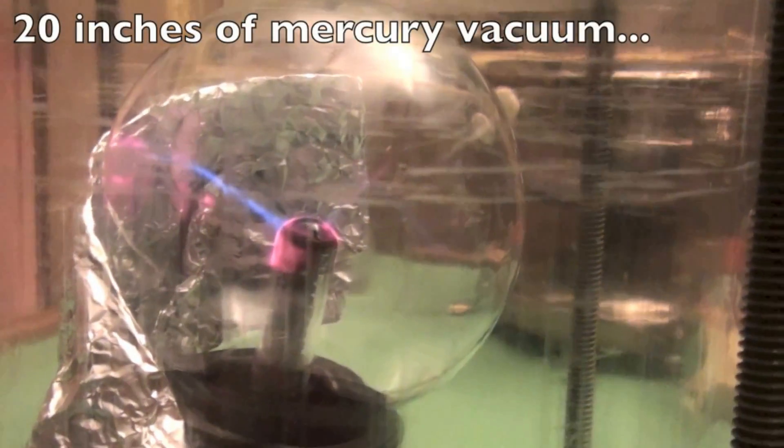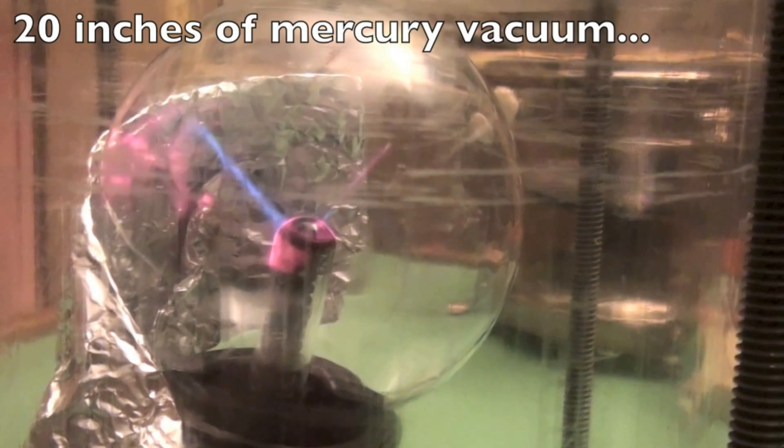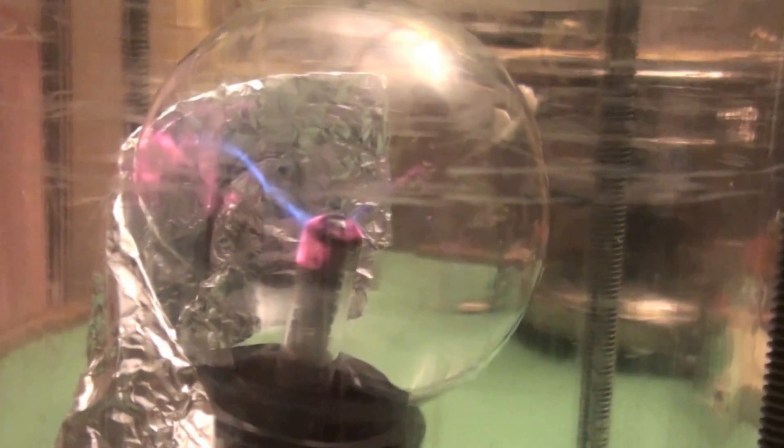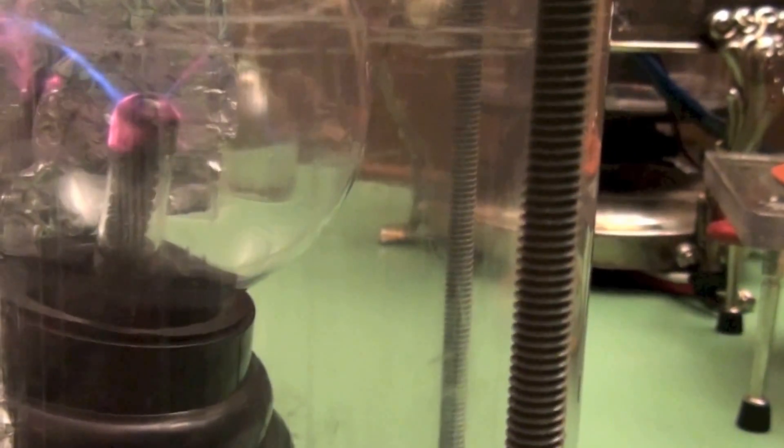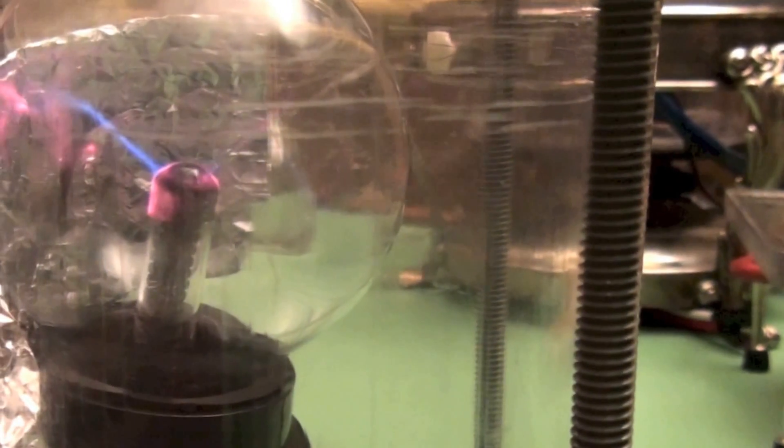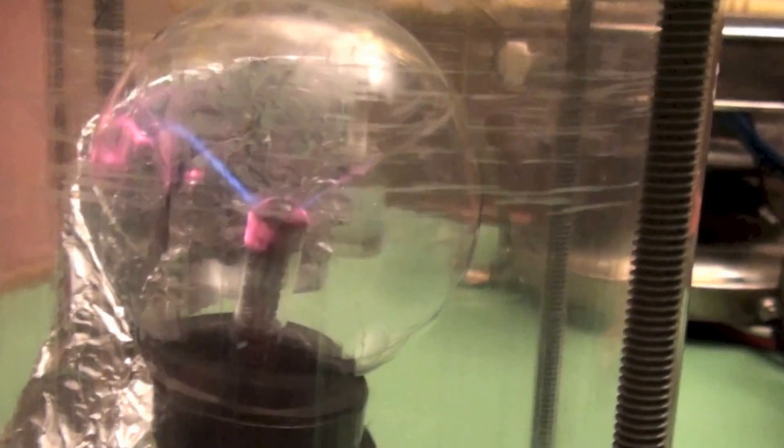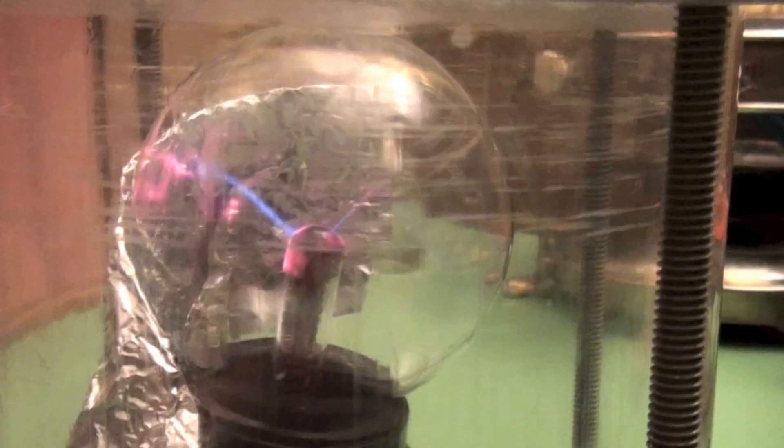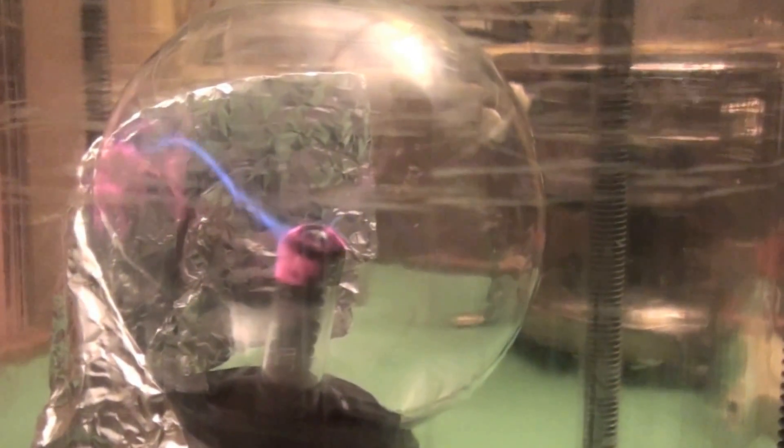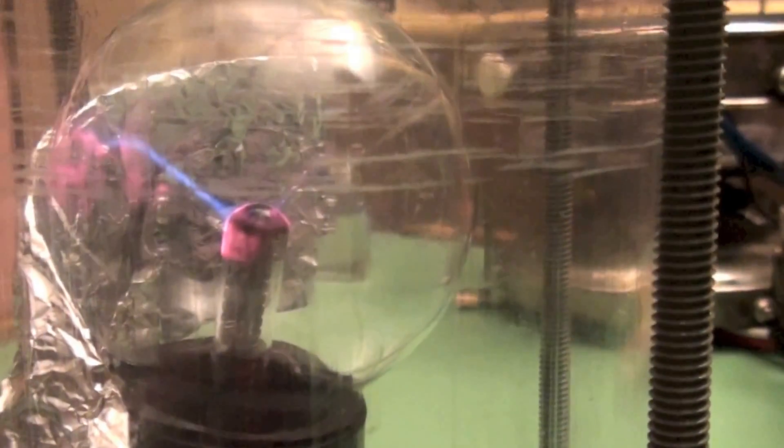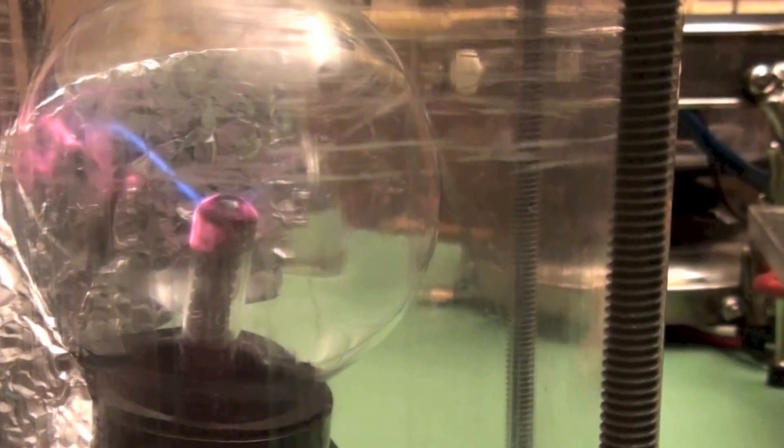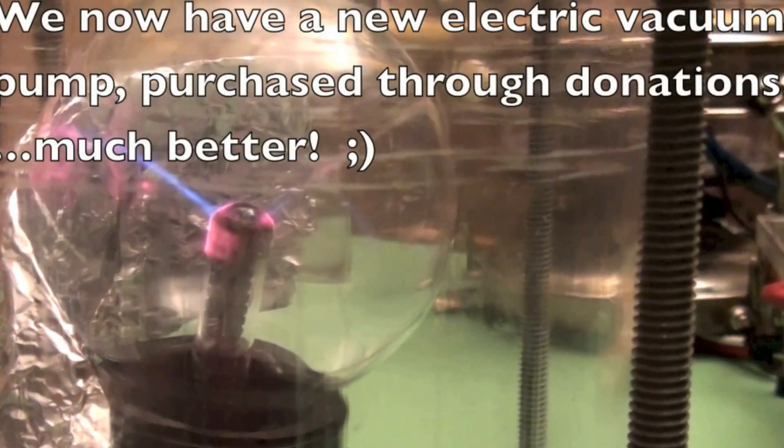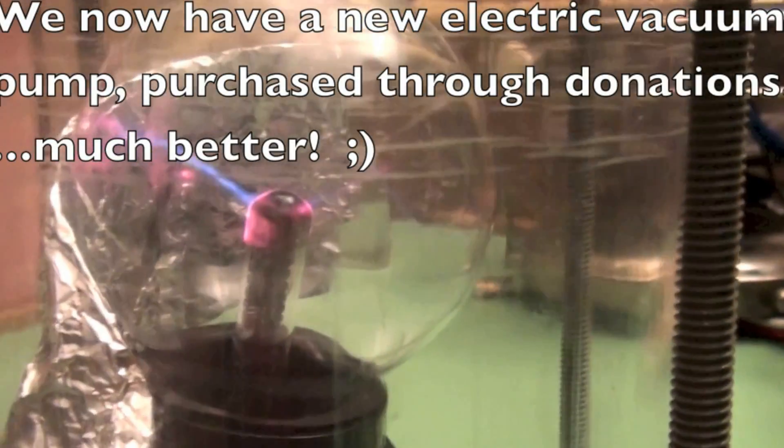Okay, we're at twenty inches of mercury now. Still have a pretty good arc, about like it was originally. This hand pumping is just not the way to go for efficiency, but boy, we're building up our forearms.